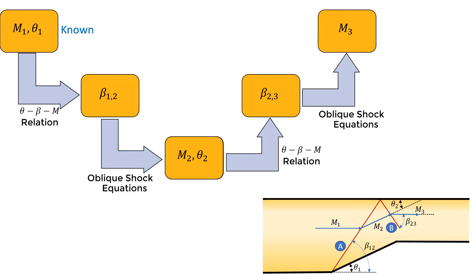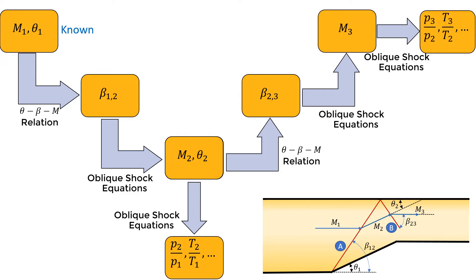Once we know the Mach numbers and the wave angles, we can estimate the pressure and temperature ratios across the shocks using the oblique shock relations. And finally, calculate the overall pressure and temperature ratio across the two shocks. You can try out the example in the handout to test this out.